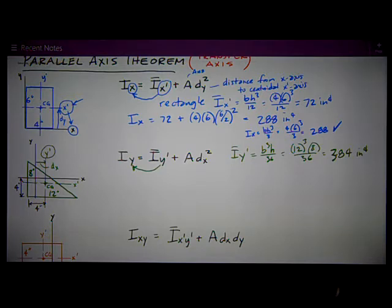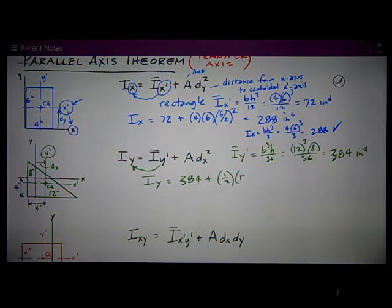Plug in the numbers, I've got 12³, which is its base, times its height of 8 divided by 36 is 384 inches to the fourth. Now, the formula is Iy equals I-bar Y-prime 384 plus the area, which is one-half base times height, one-half, 12 times 8.